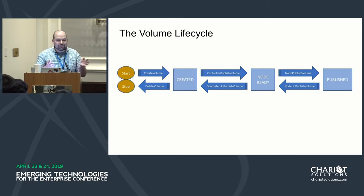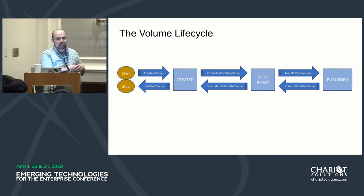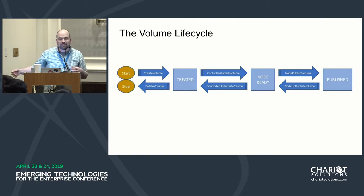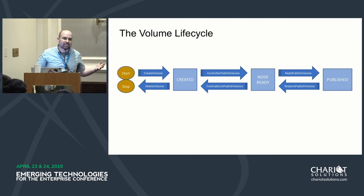Why do we need these two different ideas of publish? The first publish is to place the disk onto the node. The second notion of publish is to allow a bind mount to happen. So maybe when it's node ready it doesn't have a file system, and then when it's published it has a file system.